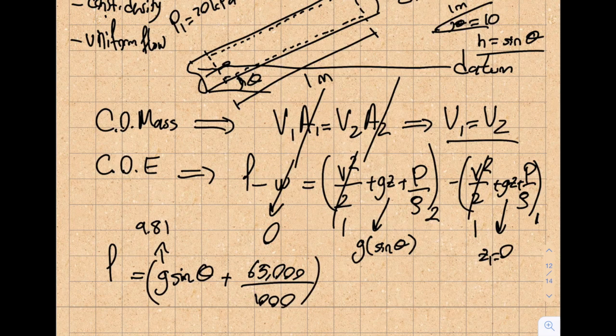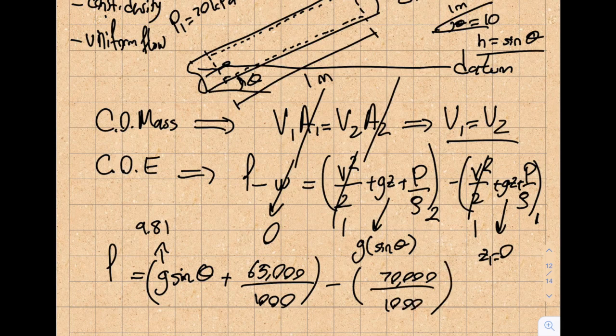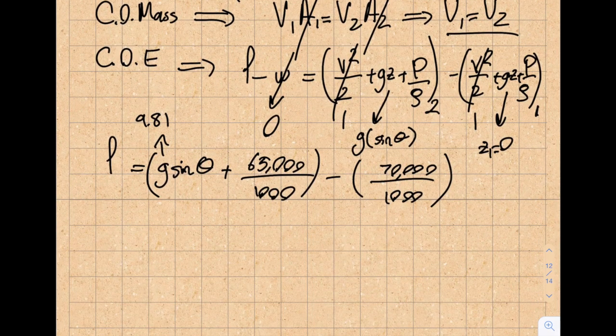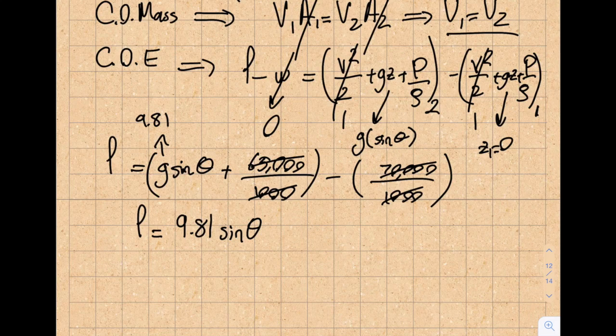This information will be supplied to you. Minus GZ is 0 and P is 70,000 divided by 1,000. Let's write a nicer equation. So it's going to be 9.81 sine theta. This is 65. This is 70, so it's minus 5. That's what my L is.